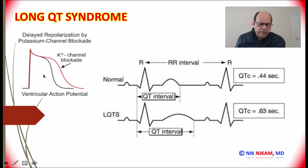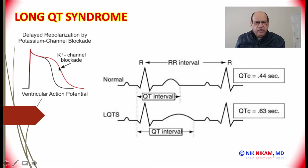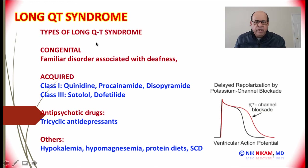If you look at the action potential, the agents that increase the refractory phase of the action potential — or phase 3 of the action potential — are the ones which predispose to the signs and symptoms of long QT syndrome. What is the etiology of long QT syndrome?